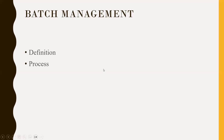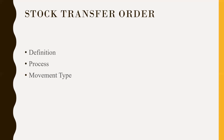Next question: What is stock transfer? There are two types: one is between plant to plant, and the other is between storage location to storage location. Transferring material from one plant to another plant, and transporting material from one storage location to another storage location — that is the difference. There are also two procedures: one-step and two-step.